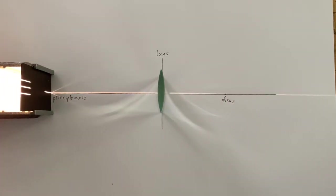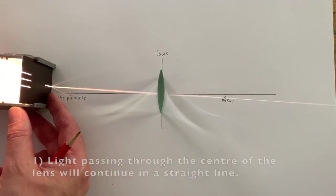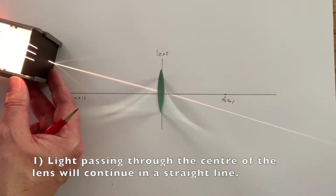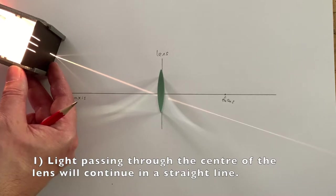In order to understand why a convex lens forms an image, we need to understand two important properties of the lens. First of all, any light that heads towards the centre of the lens will always keep going through it in a straight line.